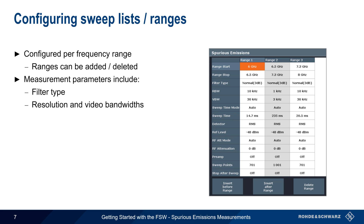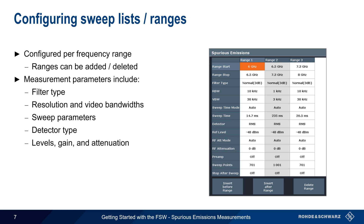It's common for resolution bandwidth to be different for different ranges. The sweep time can be automatically calculated from the sub-span and resolution/video bandwidth, or it can be manually entered by the user. For most spurious emission measurements, the default RMS detector is used, but this is also user configurable.